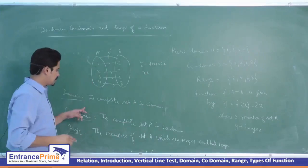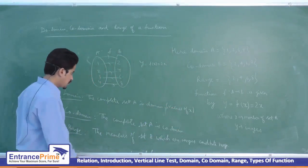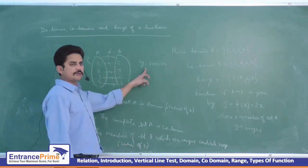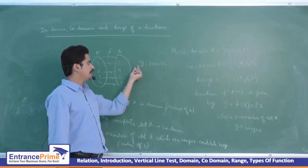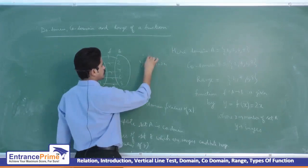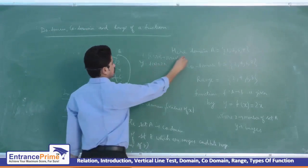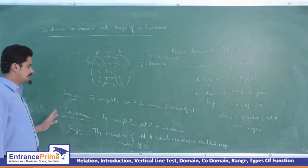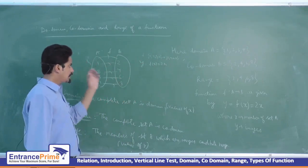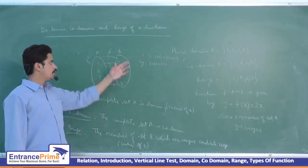So, x is the domain — the complete set A — and range consists of the values of y. Whenever we write y = f(x), it means y is a function of x, and this represents the mapping. For this particular question, domain is A = {1, 2, 3, 4} and codomain is {2, 4, 6, 8}, such that y = f(x) = 2x. This is the way of representing a function: domain, codomain, and the images constitute the range, and the function is always expressed as y = f(x), with the rule relating y and x according to the mapping.